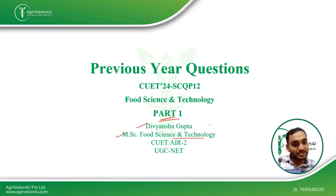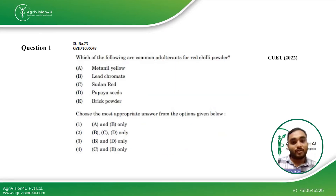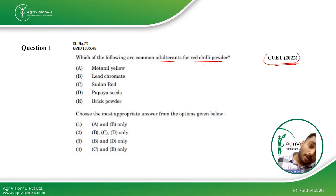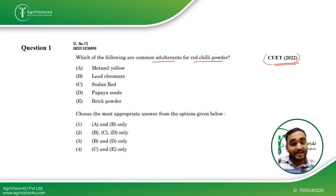Going straight to the first question: which of the following are the common adulterants for red chili powder? This question was asked in CUET 2022. They are asking about the adulterants used in red chili powder. As we know, red chili powder is commonly adulterated with something that is red in color.